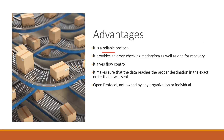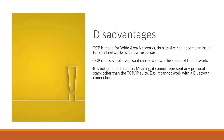Disadvantages of TCP: TCP is made for wide area networks, so its size can become an issue for smaller networks with low resources. Second, TCP runs across several layers, which can slow down network speed. Third, it is not generic in nature, meaning it cannot represent any protocol stack other than TCP itself.